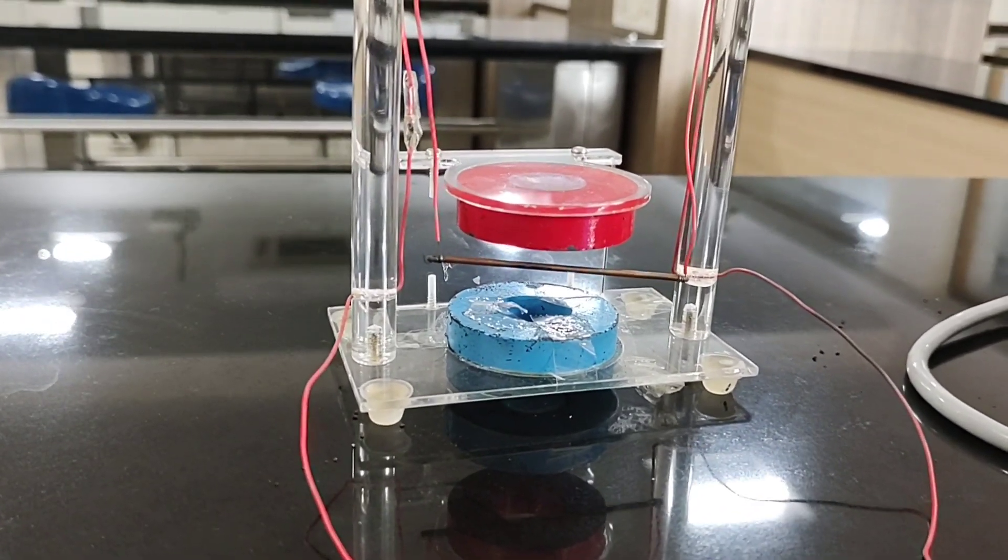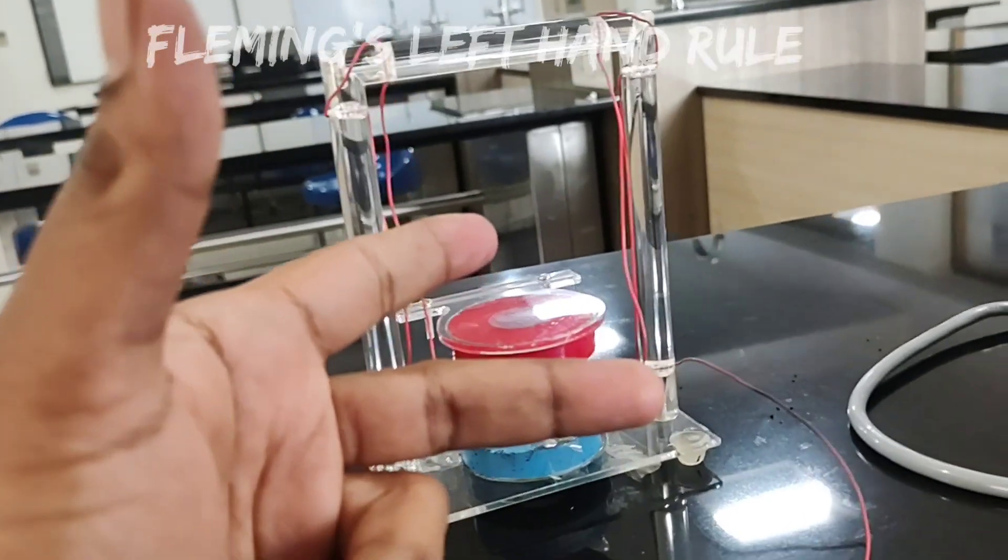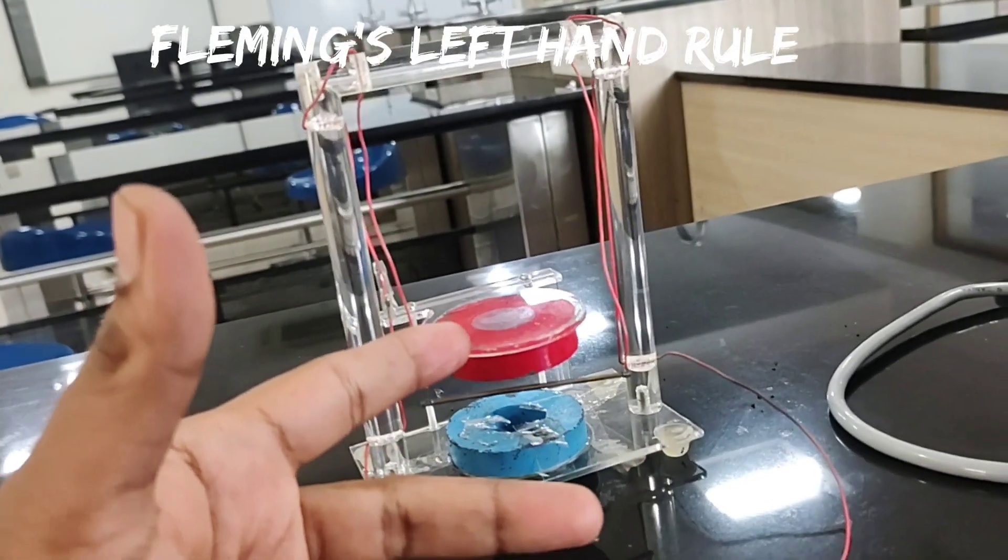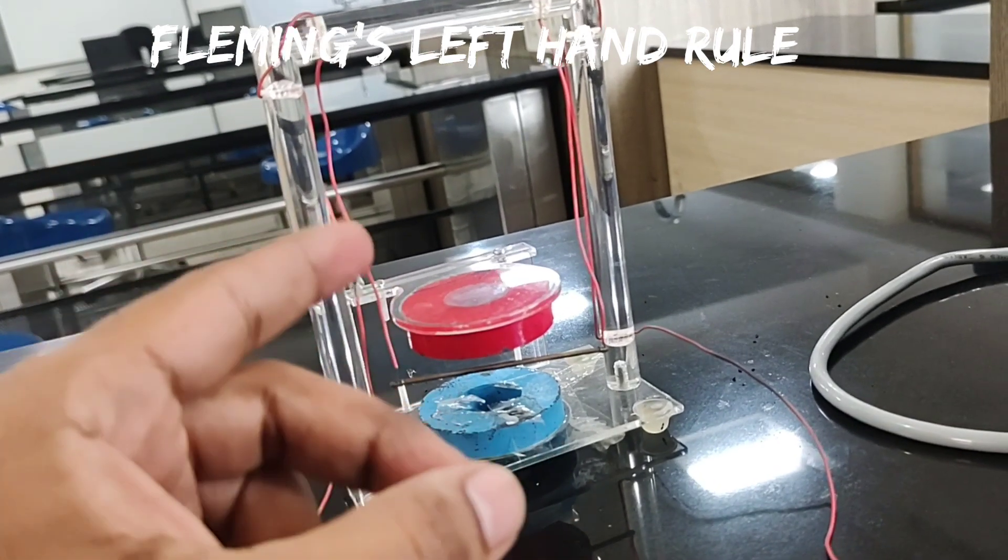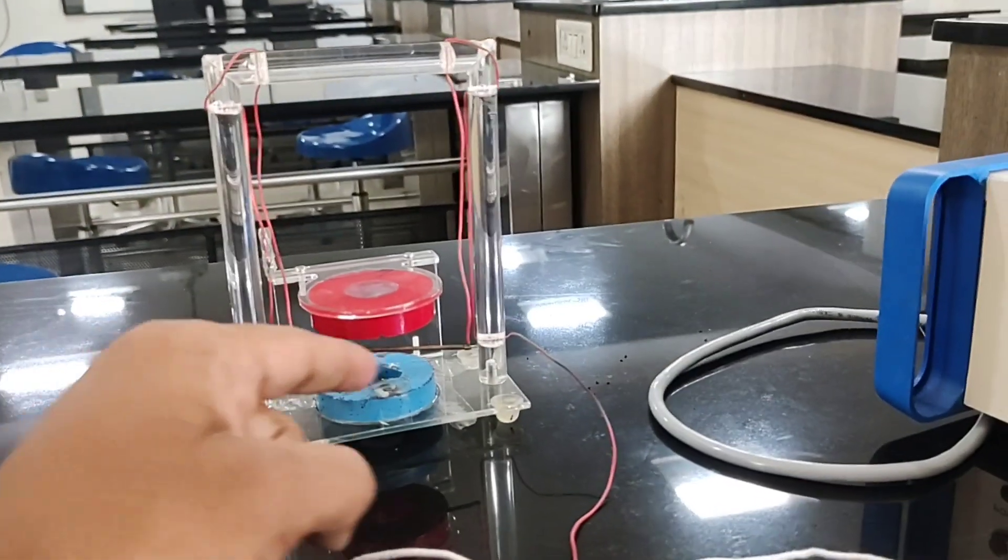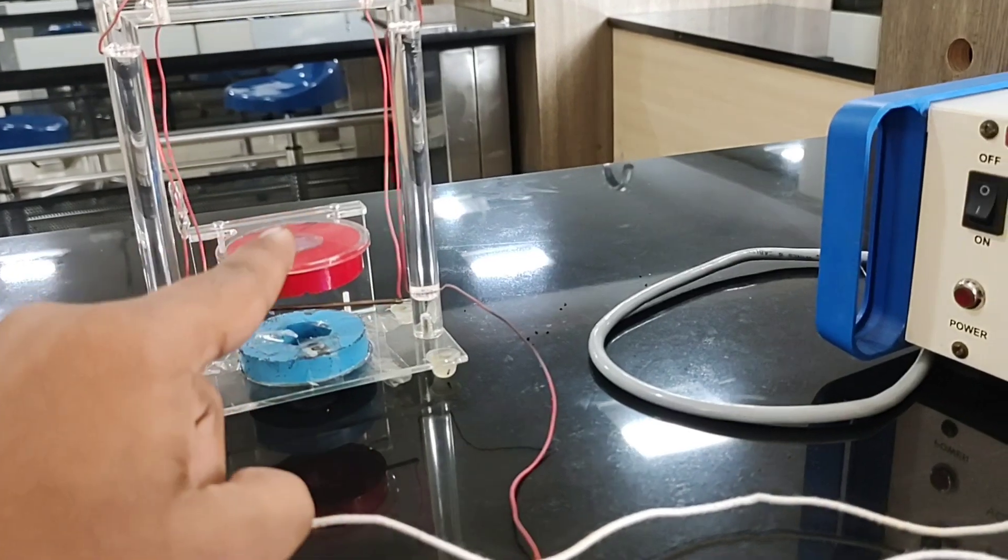Now in order to see the direction in which the force is applied, we have Fleming's left hand rule. So we stretch the three fingers of our left hand, one in the direction of current, other in the direction of magnetic field, then the thumb shows the direction of force.